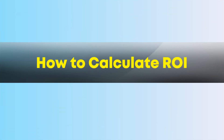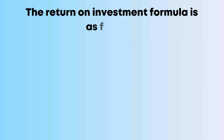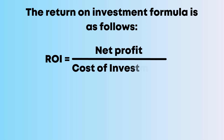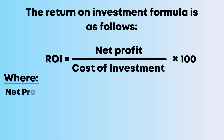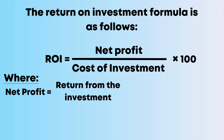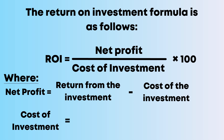Let's discuss how to calculate ROI. The return on investment formula is: ROI equals net profit divided by the cost of investment, multiplied by 100, where net profit is the return from the investment minus the cost of the investment, and the cost of investment is the initial amount invested.